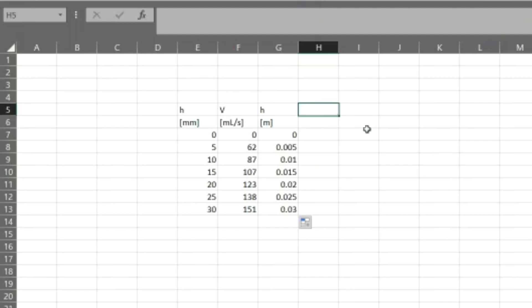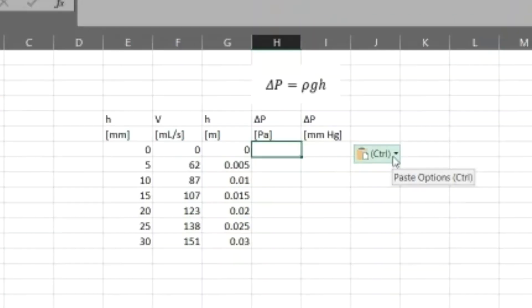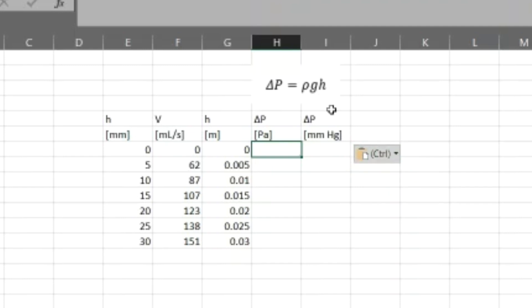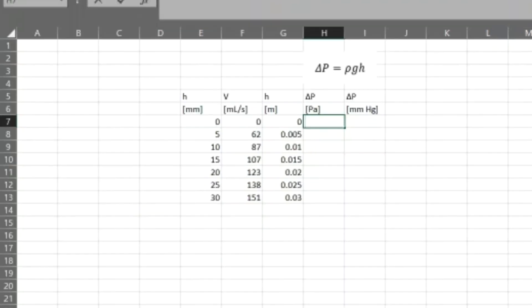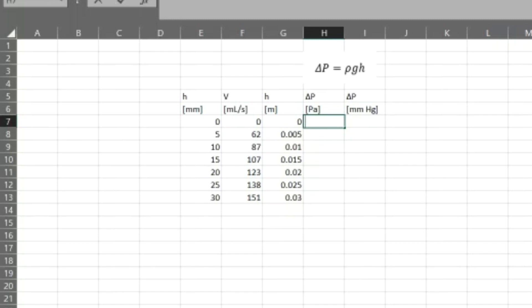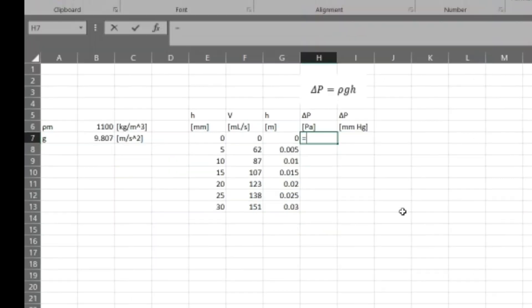And we want to know what delta P is. So delta P, delta P is rho G H like we said before. Okay, so let's write down our constants over on the left. So we have our density of the manometer fluid and we have gravity. So delta P equals rho G H. And our density and gravity don't change. So we'll put dollar signs next to that and drag that down.